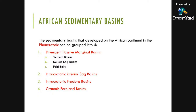Delta-X-Sag basins form where large rivers flow into the ocean, depositing sediments as deltas. The weight of this sediment adds extra subsidence to the already subsiding basin, leading to extremely thick sediment accumulations. They are called Delta-X-Sag because the weight of the sediment sags the lithosphere and causes extra subsidence. The prime example of a Delta-X-Sag basin in Africa is the Niger Delta.